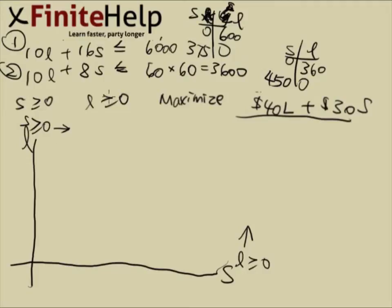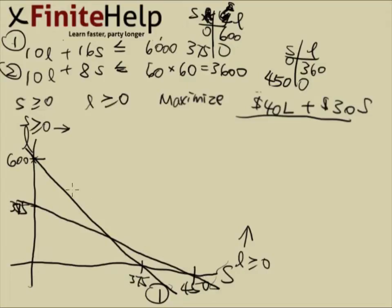So now we can graph, I'm going to make this 600, and then I'm going to make this 450. These are the maximum points. 600 and 0 is a point, and then 375 would be about right here. So here we have a line, this is line 1. And 360 would be somewhere right here. Here's the other line, line 2.